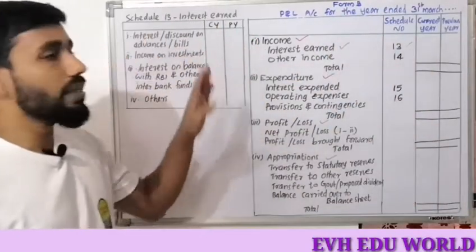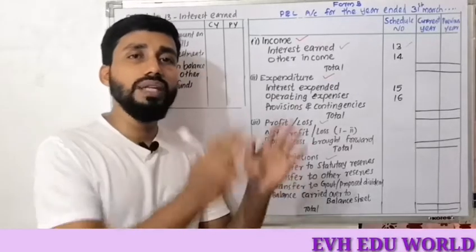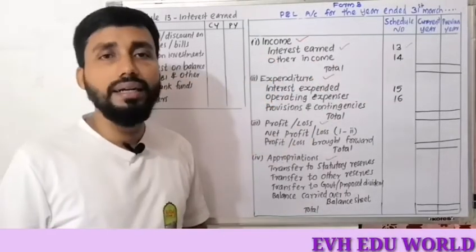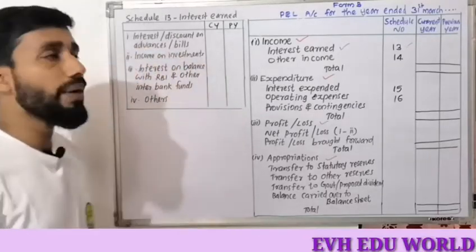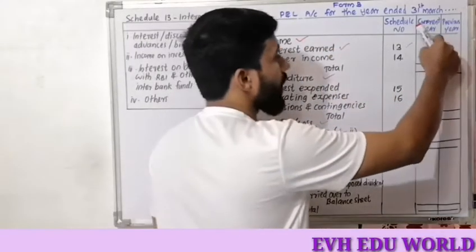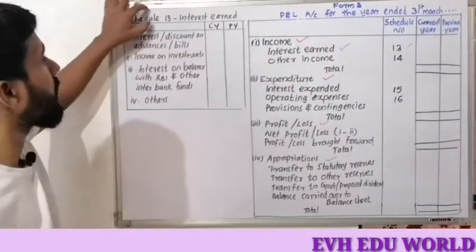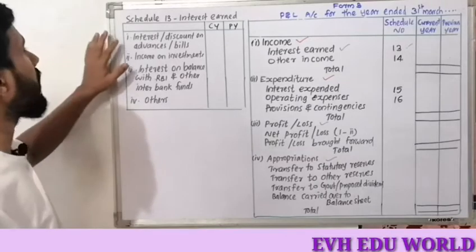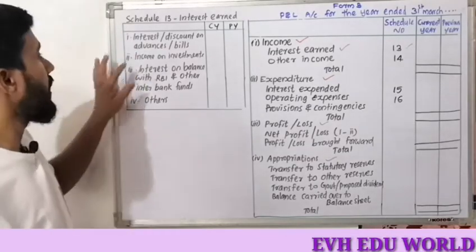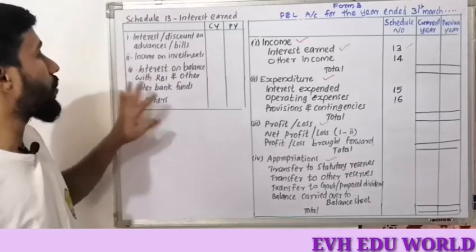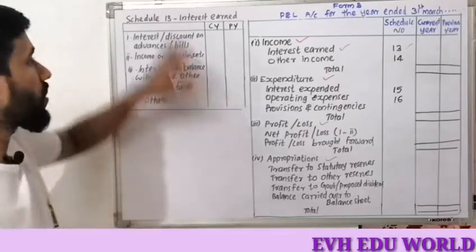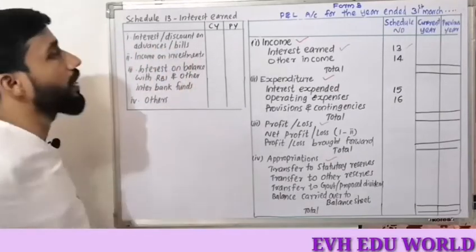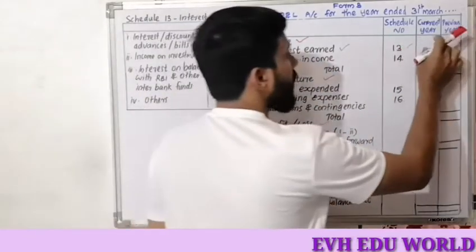We prepare all the items under Schedule 13 — Interest Earned — and arrive at a total amount. The items included in Schedule 13 are: discount on bills, advances, income on investment, and interest on balances with RBI and other interbank funds. We prepare the total amount of interest earned under Schedule 13.